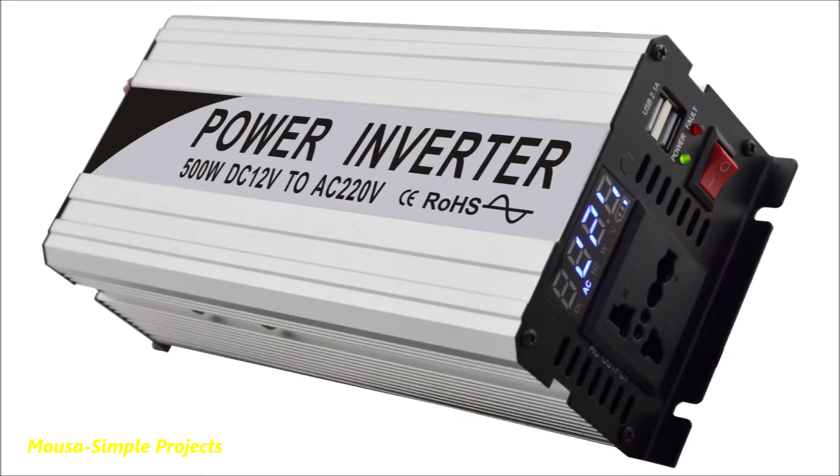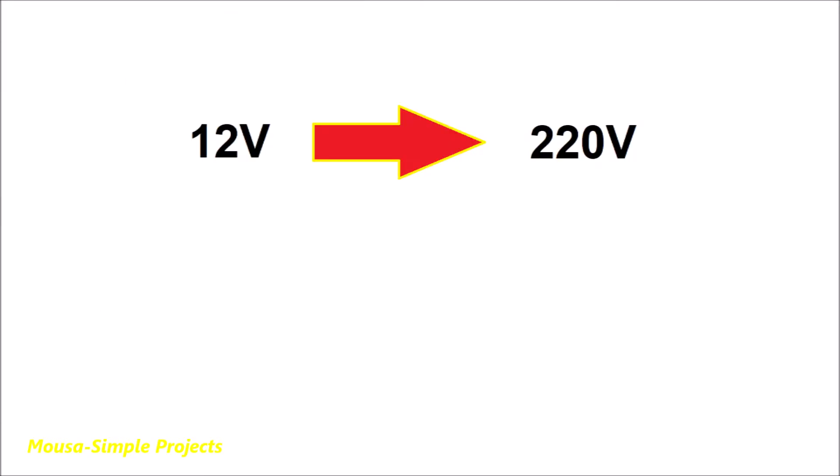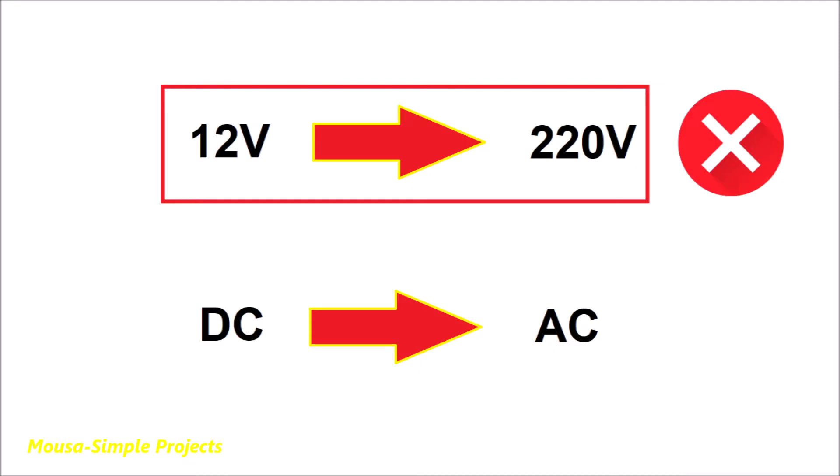The traditional inverters that work with car batteries do two tasks at the same time. First, increasing the low voltage of the battery to high voltage, and second, converting the DC voltage to AC voltage. However, in some cases we don't need to increase the voltage.